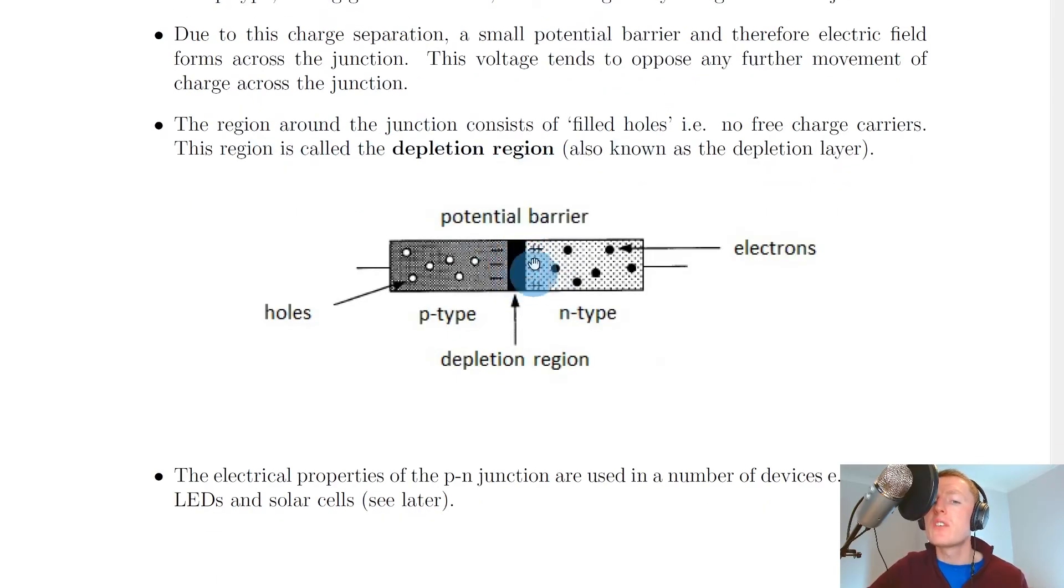The region around the junction consists of filled holes - i.e., no free charge carriers. Therefore, this region is called the depletion region, also known as the depletion layer. Here we've got the depletion region where we've got no free charge carriers, with this side being positively charged and this side being negatively charged.